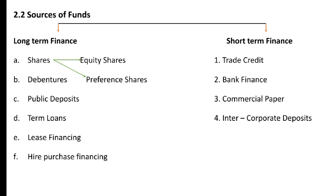Short-term finance. Trade credit: this fund emerges when a firm purchases raw material on credit. The volume depends upon the quantum of purchase and the period for which credit is available. Second is bank finance. Commercial banks play an important role in meeting the short-term finance needs of the corporate sector. The two forms of bank credit are unsecured and secured.